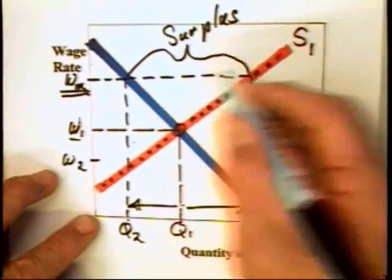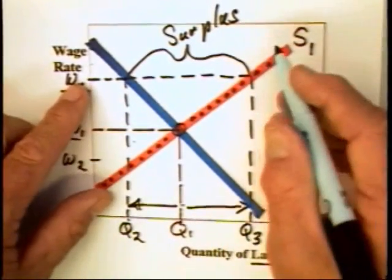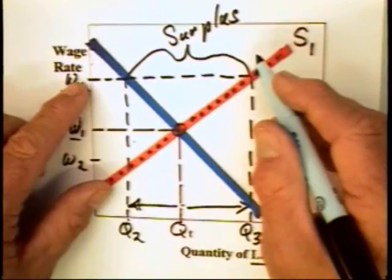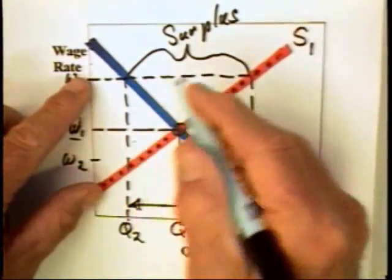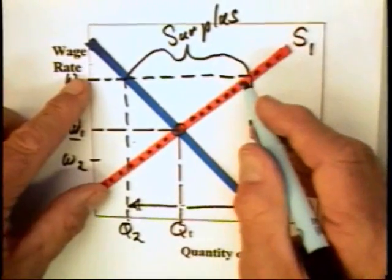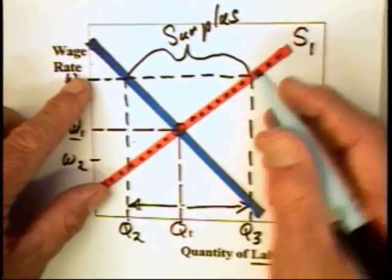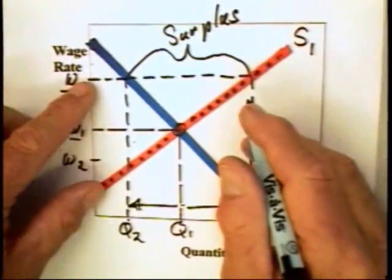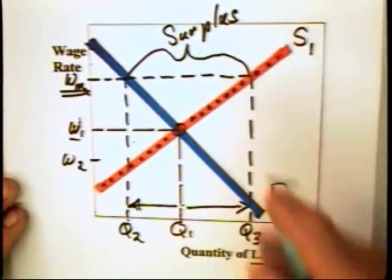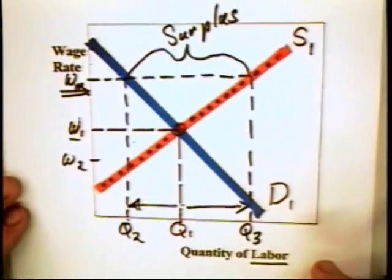Some economists have also said that with the minimum wage, employers are urged to discriminate. That is, they have this surplus and they only need this many workers, so if employers are prejudiced against blacks or women or Indians or whatever, then they can choose the workers of their own preference.